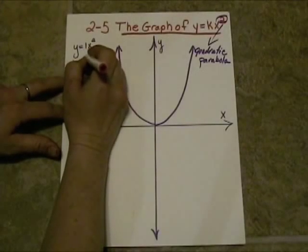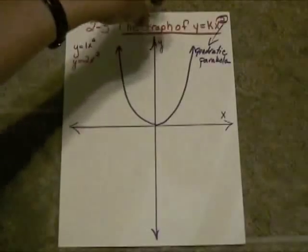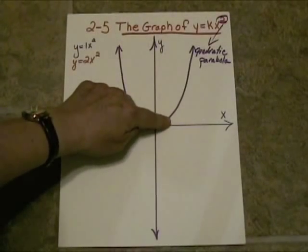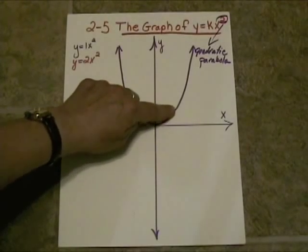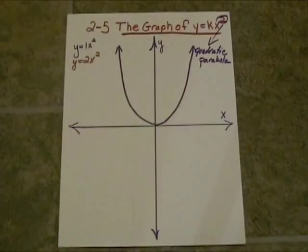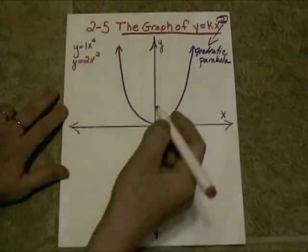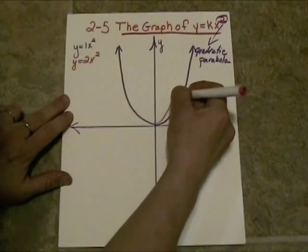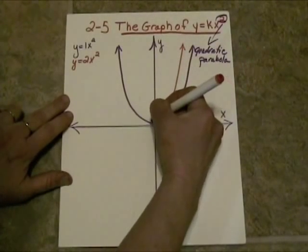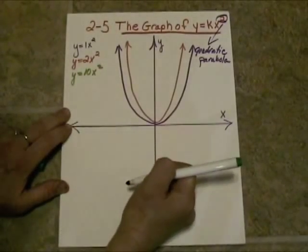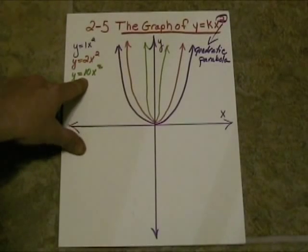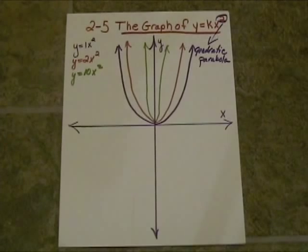With y equals 2x squared, for every x we plug in, it gets squared and then doubled to become the y. This has the effect of narrowing or skinnying up your parabola. With y equals 10x squared, it gets even thinner. The higher your k is, the skinnier your parabola will get.